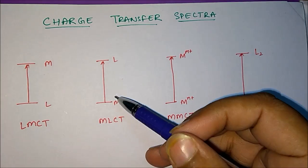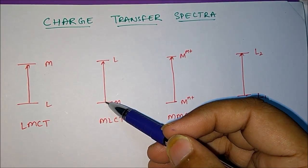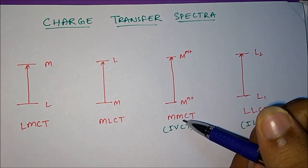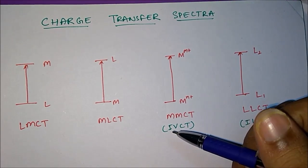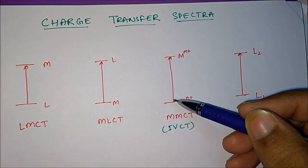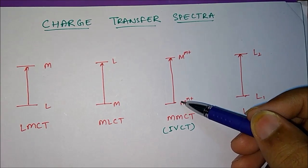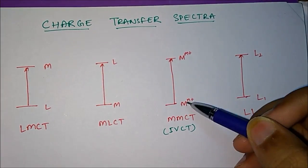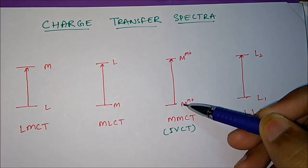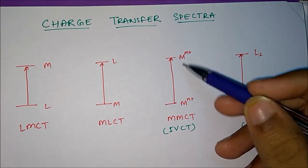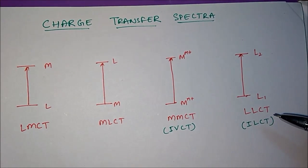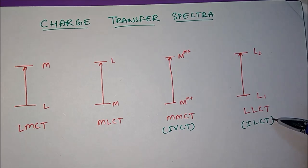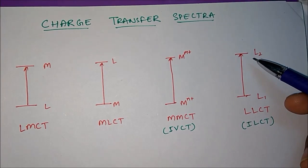Similarly, in MLCT what will happen? It is metal to ligand charge transfer, meaning the transition of electrons will happen from metal orbital to ligand orbital. There is one more type, MMCT - metal to metal charge transfer, also called intervalence charge transfer. In this, the electron transition takes place in the same complex from one metal orbital to a second metal orbital, where both metal orbitals are of different oxidation states. The last one is LLCT or ligand to ligand charge transfer, also called interligand charge transfer, in which electron transition takes place from one ligand to another ligand.